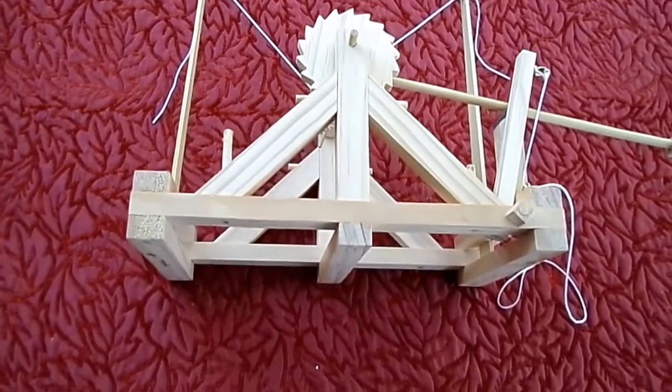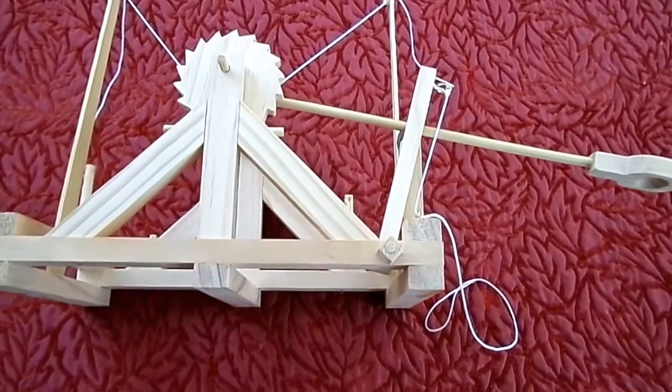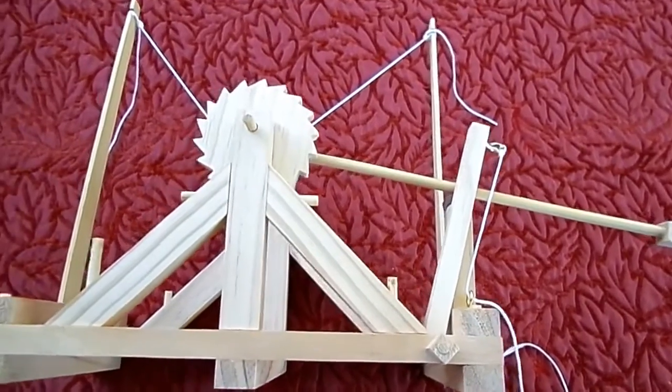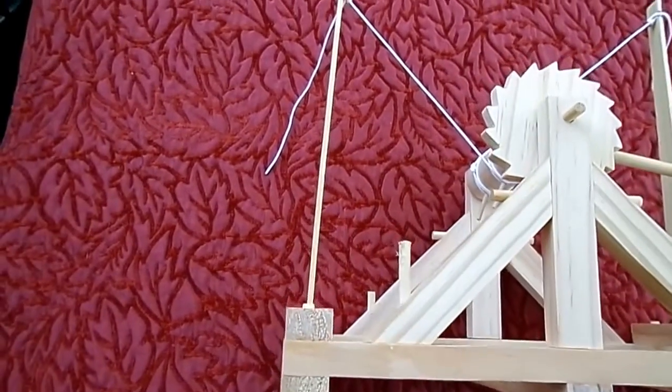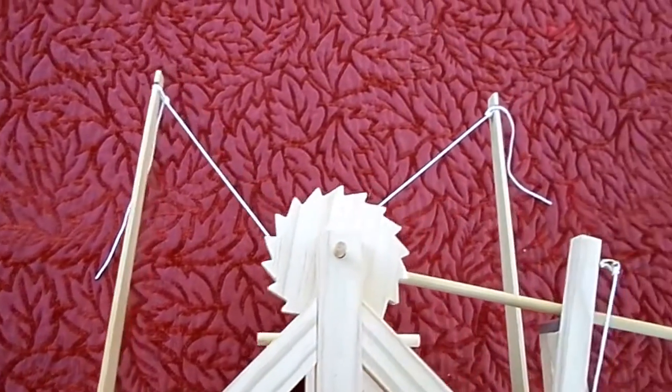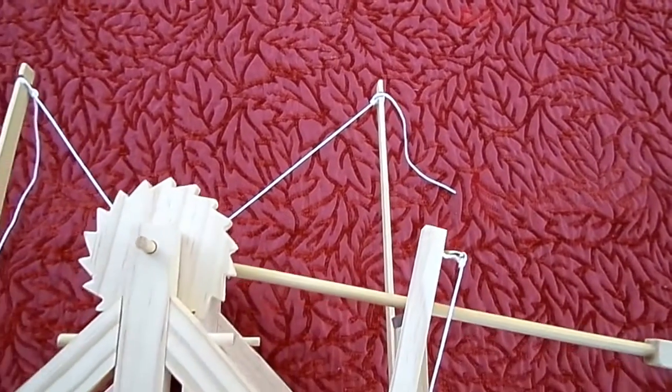Earlier catapults had used tension within twisted rope. Leonardo used wood placed under tension from ropes being turned on a central pulley.